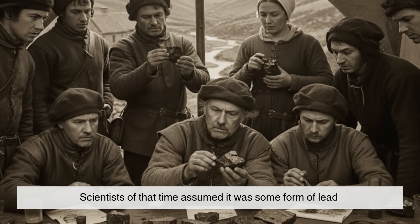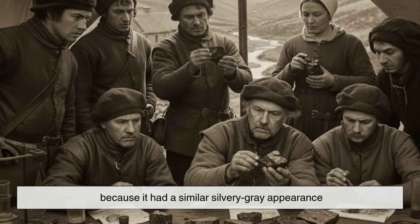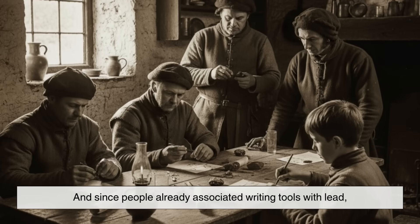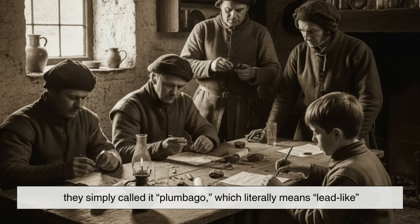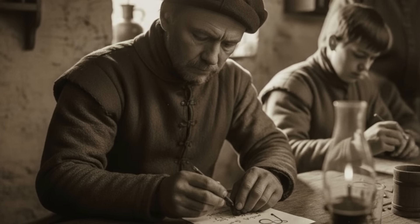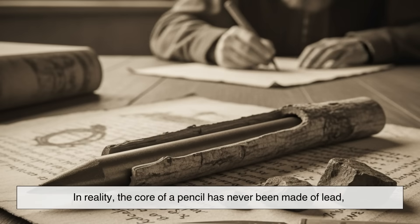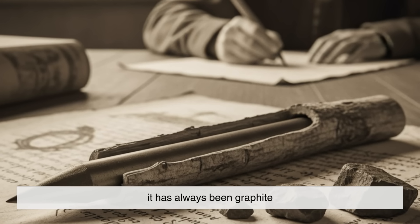Scientists of that time assumed it was some form of lead because it had a similar silvery gray appearance. And since people already associated writing tools with lead, they simply called it plumbago, which literally means lead-like. This little misunderstanding is what gave birth to the term pencil lead. In reality, the core of a pencil has never been made of lead. It has always been graphite.